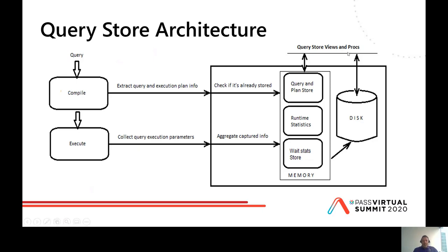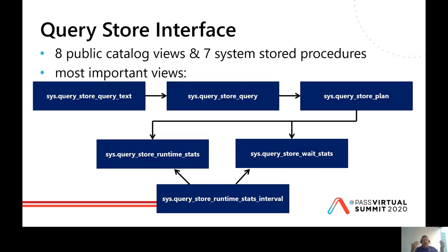Due to a compromise with data storage and performance, waits are grouped in wait categories. Plan, runtime stats, and wait stats are written first in internal in-memory tables, then moved to internal disk tables with a background job every 15 minutes by default. We do not have access to these tables.